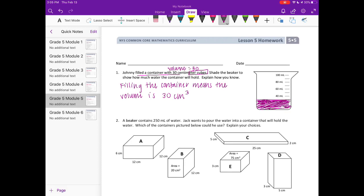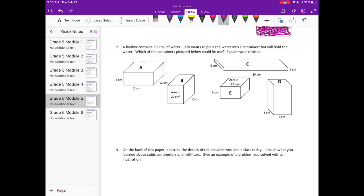Number two. A beaker contains 250 milliliters of water. Jack wants to pour the water into a container that will hold the water. Which of the containers pictured below could he use? Explain your choices. So he wants to fill it with 250 milliliters of water, or 250 centimeters cubed if we're talking about these rectangular prisms. So we're looking for anything that's 250 centimeters cubed or bigger, or more.